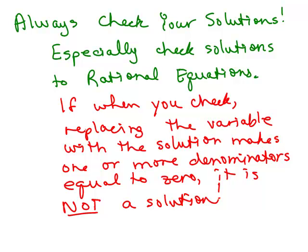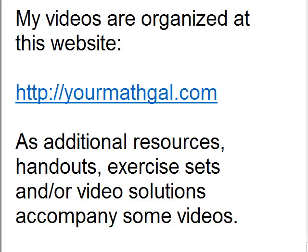The upshot is: anytime you solve any equation, always check your solutions — but especially for rational equations. When you check, if replacing the variable with the solution makes one or more denominators equal to 0, it is not a solution. So always be careful and always check.